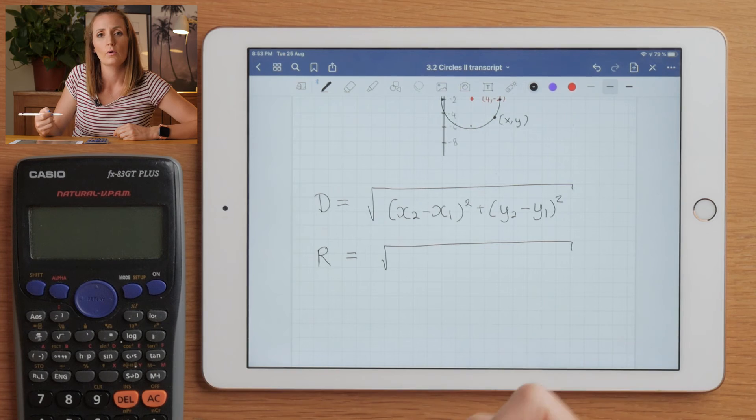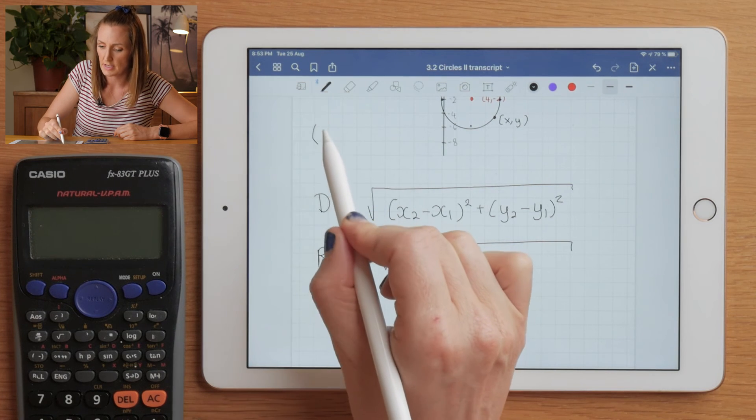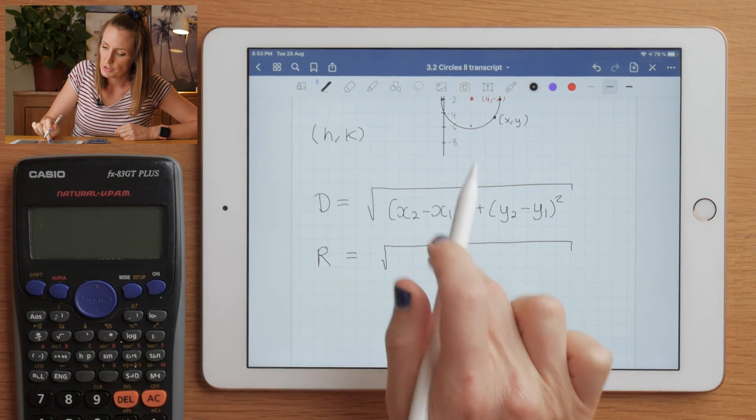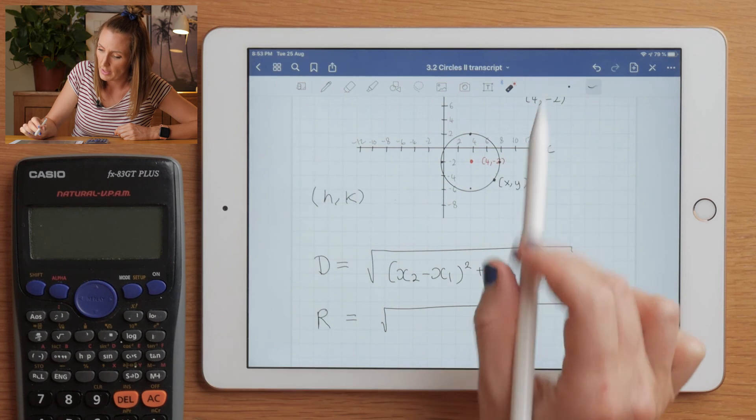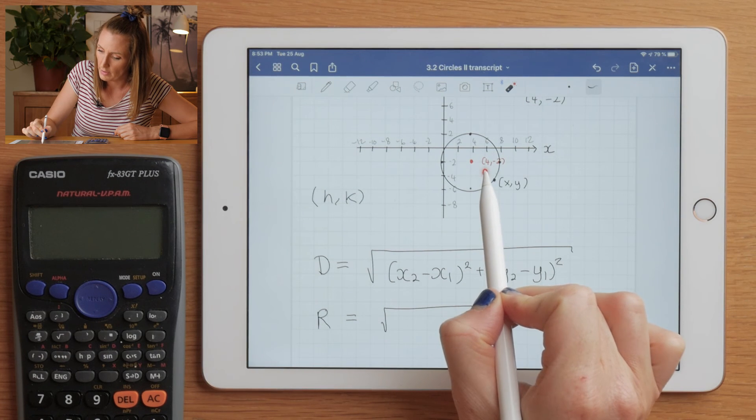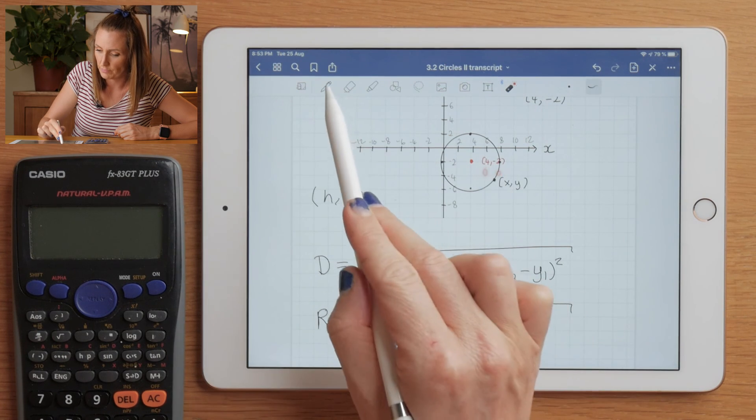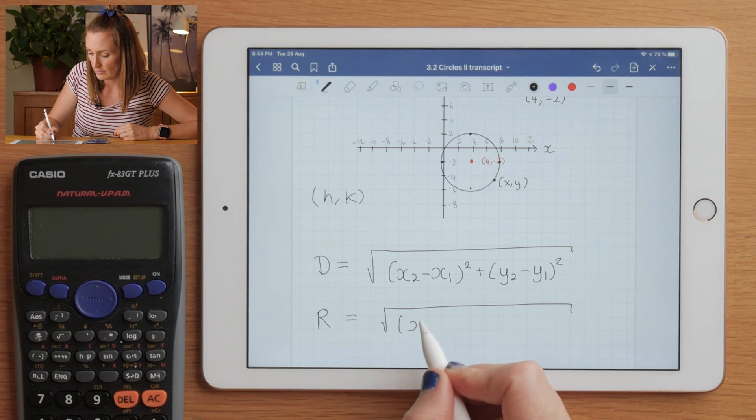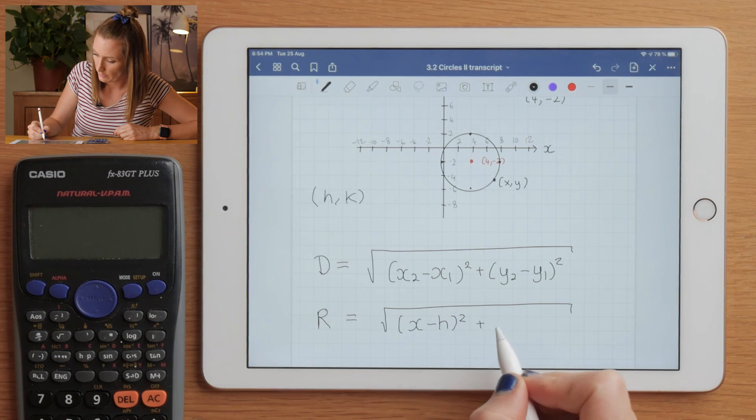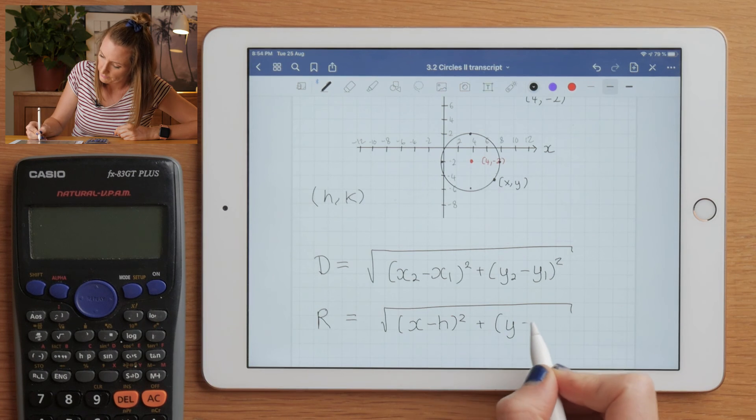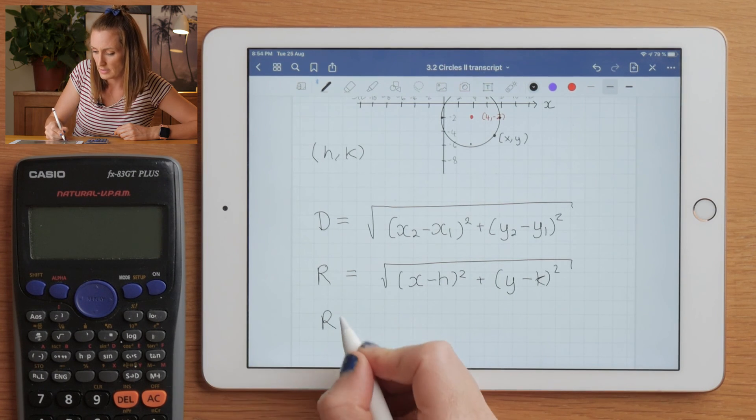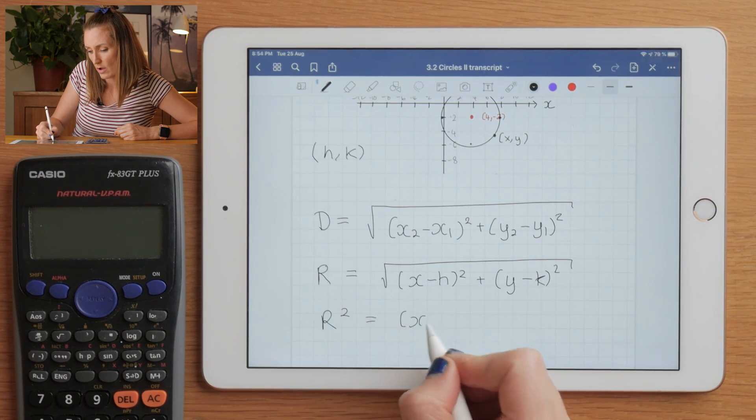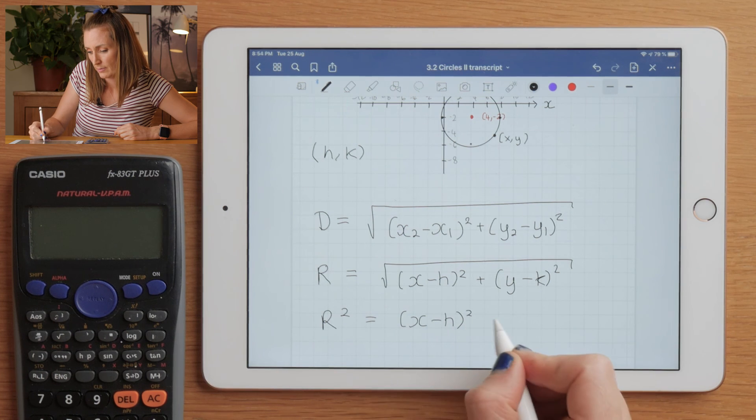And generally speaking, when working with circles, you call the center (h, k). So in our previous example, h would be 4 and k would be -2. So we can put those into the distance formula and we can square both sides, and that's our equation for a circle.